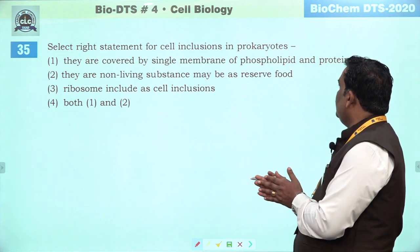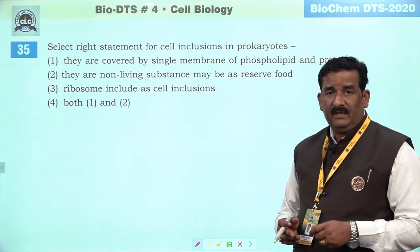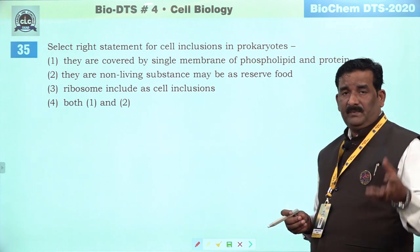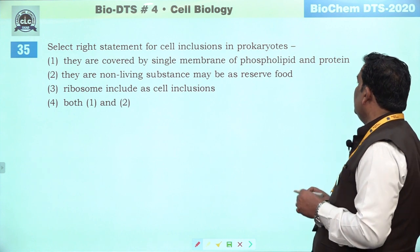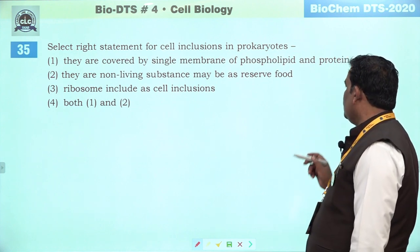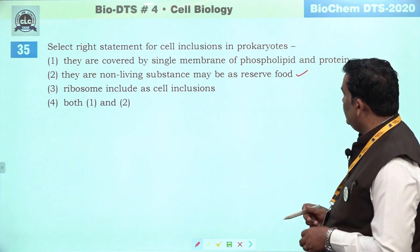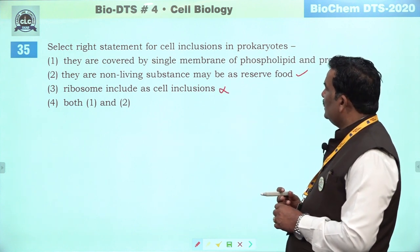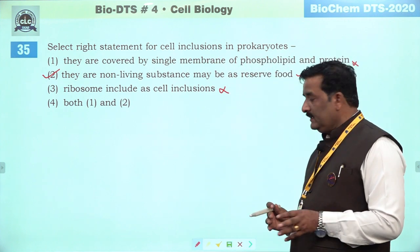Next question: select right statement for cell inclusion in prokaryote. Cell inclusion ki do shartein hoti hain: number one — they are not covered by any membrane. Aur doosra hai ki inhein apne cell ka reserve food store karna hai — 50% se zyada ek cell ka dry weight banaate hain. They are covered by single membrane — true membrane se kabhī covered nahi hote. They are non-living substance, may be as reserve food — bilkul sahi hai — glycogen hai, cyanophycean granule hai, phosphate granule hai. Ribosome are not included. Second is the right answer.